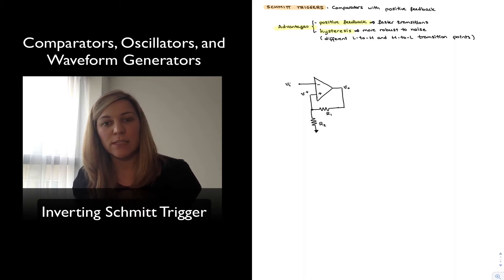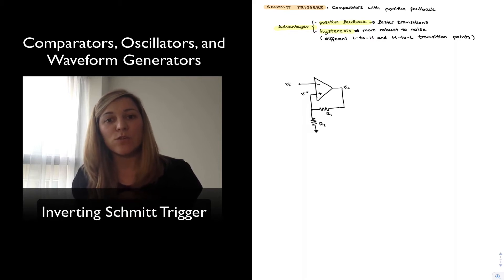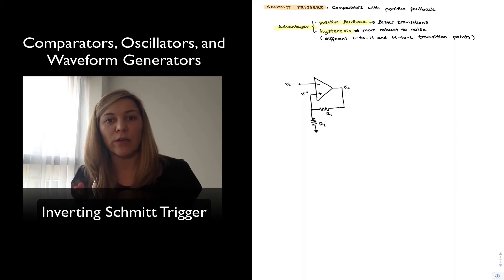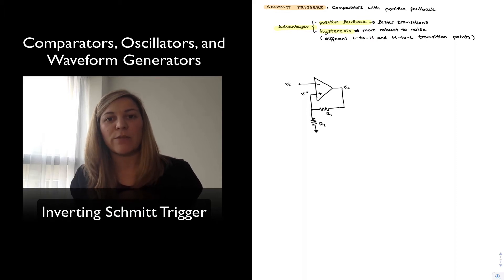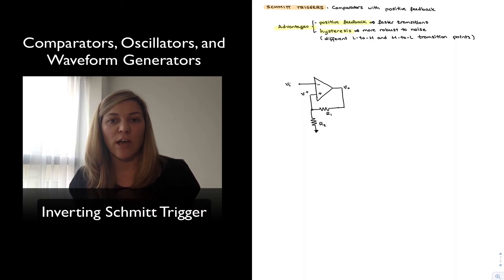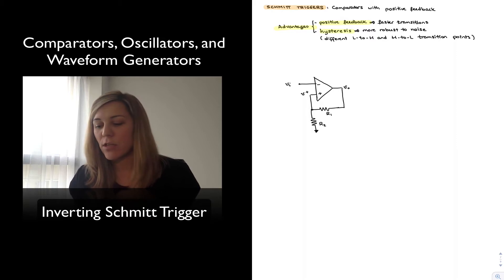The reason for faster transitions is that the positive feedback reinforces the direction that the output is going. So if the output is going high, that is being fed back into the positive input terminal, and it reinforces that direction of change of the output, making it a faster transition.